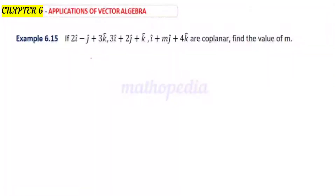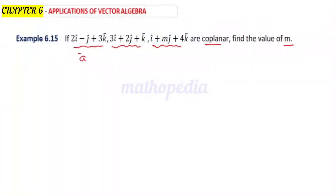Hello students, welcome to Mathopedia. Class 12, example 6.15: if three vectors are coplanar, then find the value of m. Take the three vectors to be a vector, b vector, and c vector.